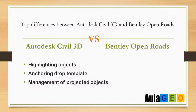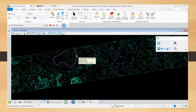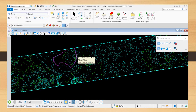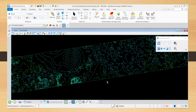Another thing I find missing in OpenRoads is the highlighting of objects when they are selected. In Sable 3D, when you select a surface all of it is highlighted. In OpenRoads, only its perimeter is highlighted, and that highlighting is not even quite noticeable.